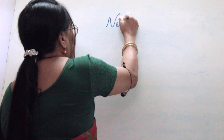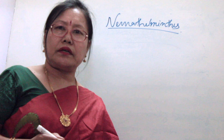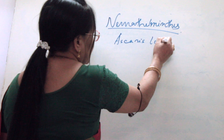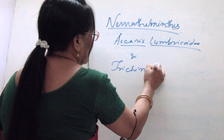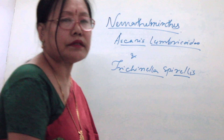Hello. There is another phylum called Nematelmynthis. For Nematelmynthis, your syllabus includes two types of parasites: Ascaris and Trichinella spiralis. These two Nematelmynthis parasites are what we are going to discuss.